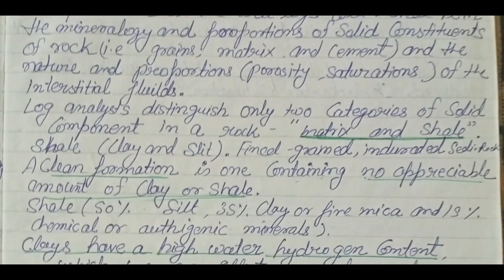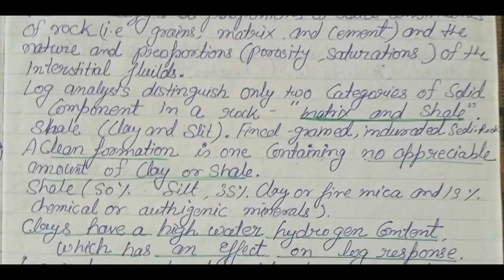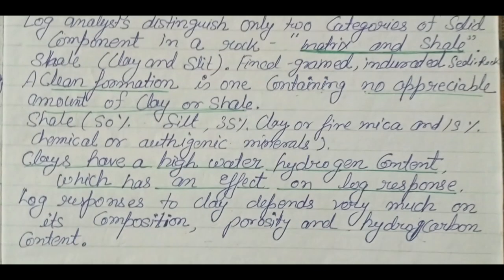Log analysis distinguishes only two categories of solid components in a rock: matrix and shale. Comment what is matrix in geology. The composition of shale is a mixture of clay and silt — it is a fine-grained indurated sedimentary rock. A clean formation — called clean sandstone — means the quantity of shale is negligible. Clean formation contains no appreciable amount of clay or shale.